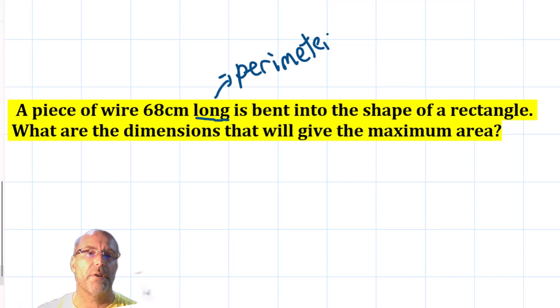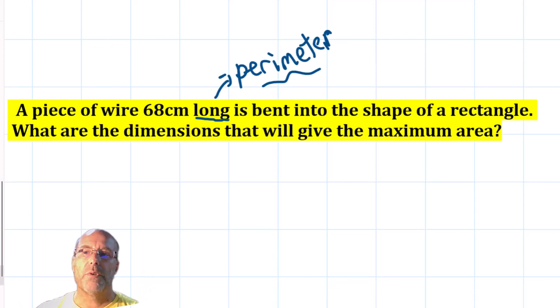Again, clarifying is a really good step to do as a group. So we check that we understand what we need to do. We need to come up with two dimensions, the length and the width, and the perimeter is a given, which might serve the third point, paraphrase.